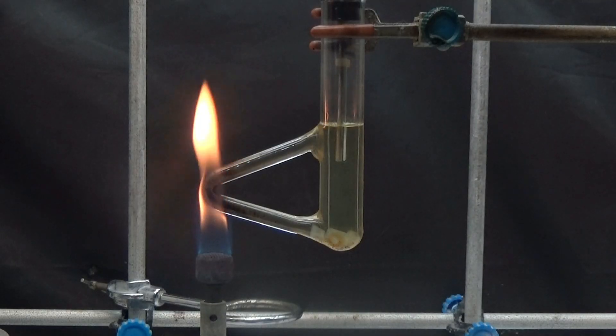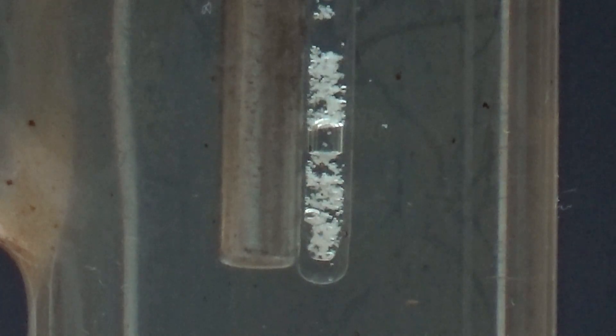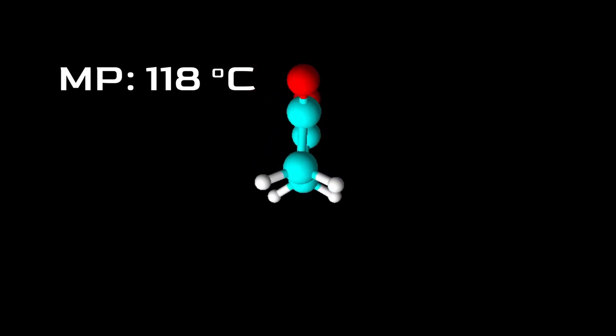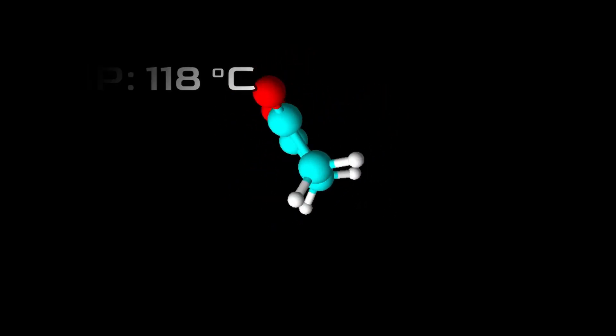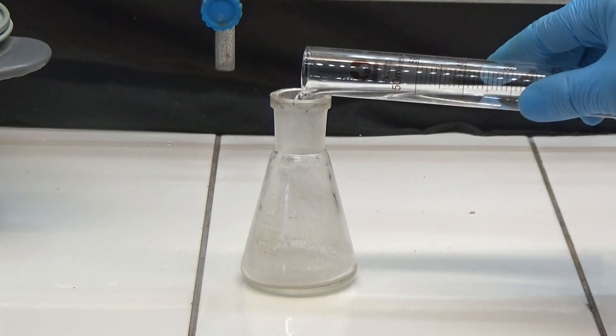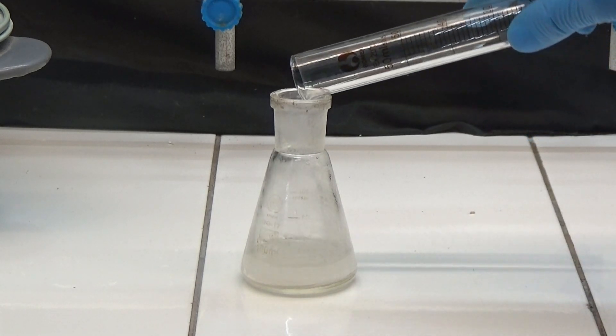The melting point test showed a result between 130 and 140 degrees. The melting point of succinic anhydride is 118 degrees. A mixture of anhydride and succinic acid is the reason for the low melting point and unmelted white material in the capillary.